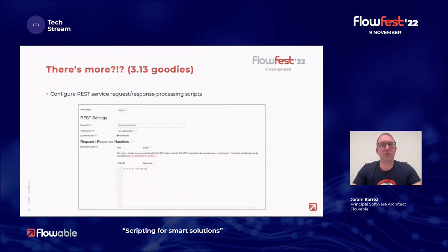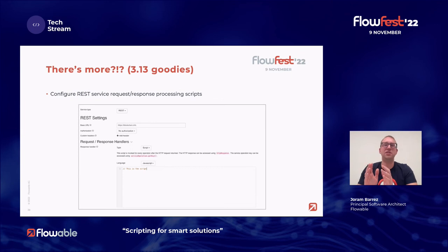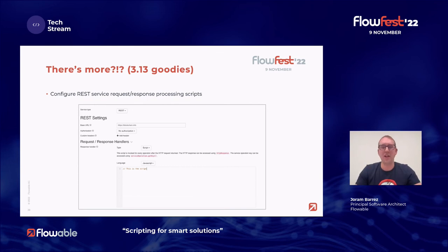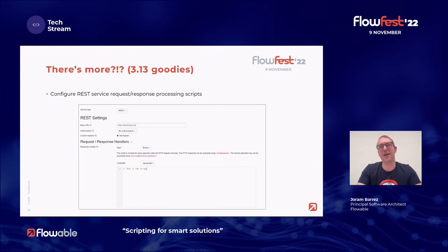There's more. Looking at what's coming in 3.13, scripting is getting a lot of love. What I did — having a REST request then scripting — could actually be combined. In 3.13, we added a way to attach a script handler for a request and response, so you can do anything with the request before it's sent or with the response when it comes back. I could move my normalization logic into the response handler, so anybody using that service gets the same nice format — embedded within the REST service definition, reusable across BPMN processes, cases, and more.